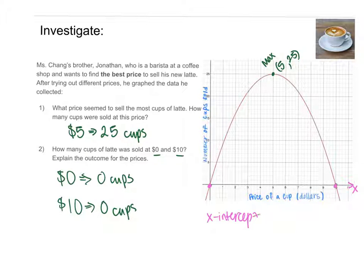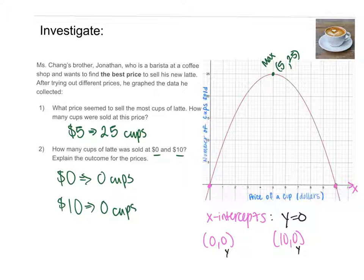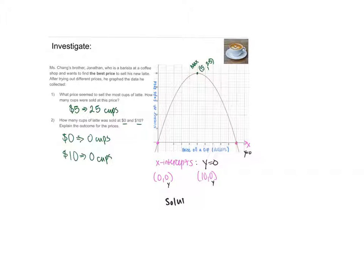We have two x-intercepts: at (0, 0) and at (10, 0). Notice that at x-intercepts the y-value is always zero, because they sit on the x-axis where y equals zero. Today's lesson is about finding the solutions of a graph — to find solutions, you look at where the parabola crosses the x-axis. This parabola crosses at x = 0 and x = 10, giving two solutions.